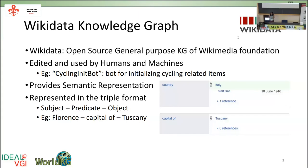Wikidata has a semantic representation in the format of triples — the common knowledge graph format — where we have the subject, predicate, and object. The subject is the entity of interest, the predicate represents attributes or properties, and the object can either be a literal value or another entity that can be linked to the current entity. For example: 'Florence — capital of — Tuscany' or 'Florence — country — Italy.'